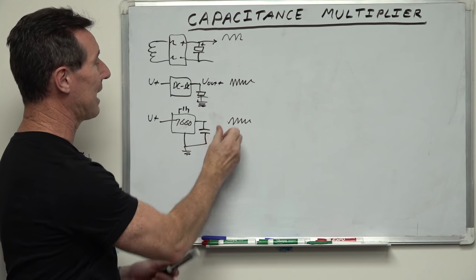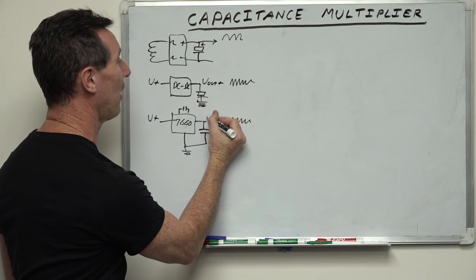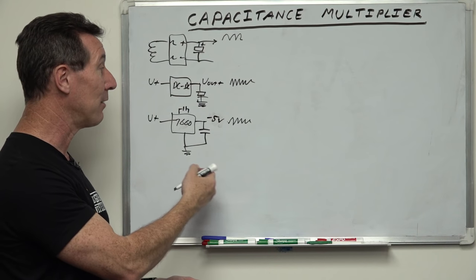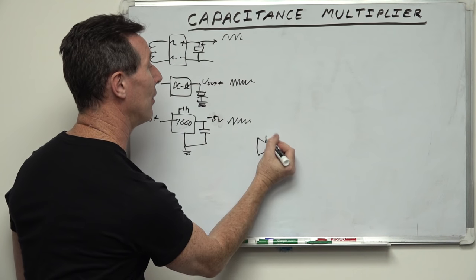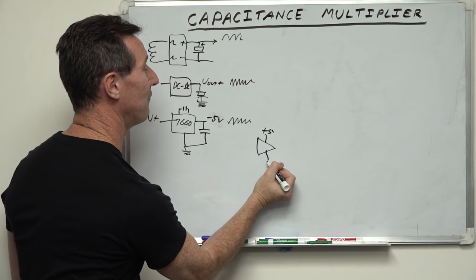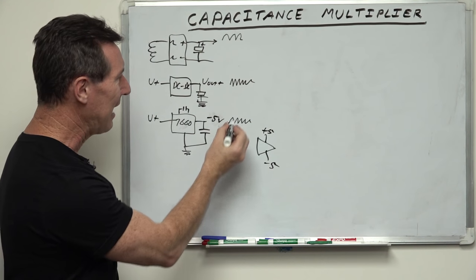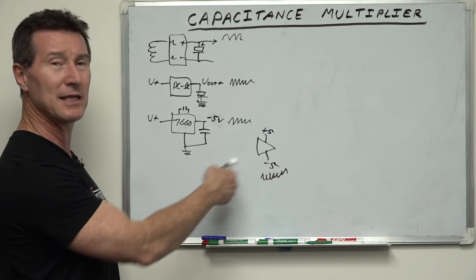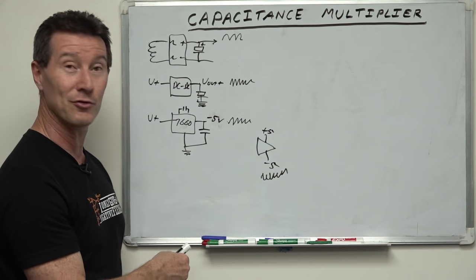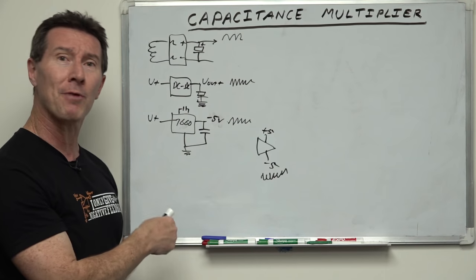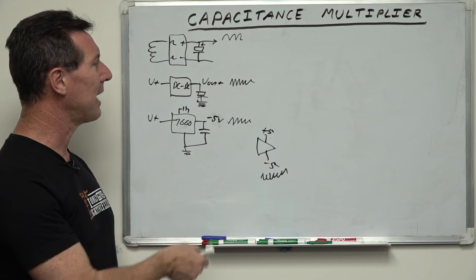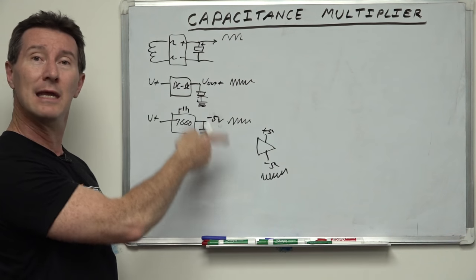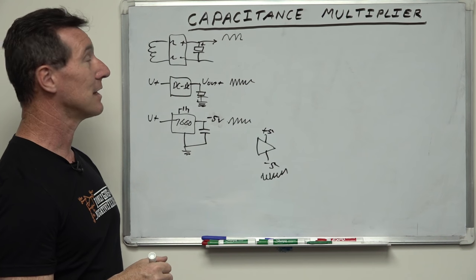That ripple could be a couple of hundred millivolts, which can really ruin your day - especially if you're using the 7660 to go from plus five volts to minus five volts to invert that rail and power an op-amp from plus and minus five volts. Having a five-volt rail is fine, but if you've got a couple hundred millivolts or even tens of millivolts of ripple on your rail, that's not good. You want to clean up ripple in any of these cases.